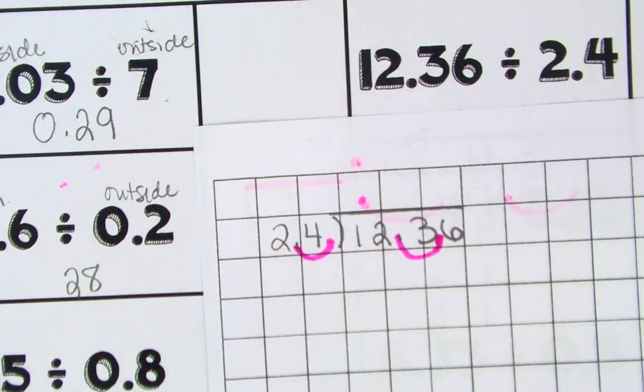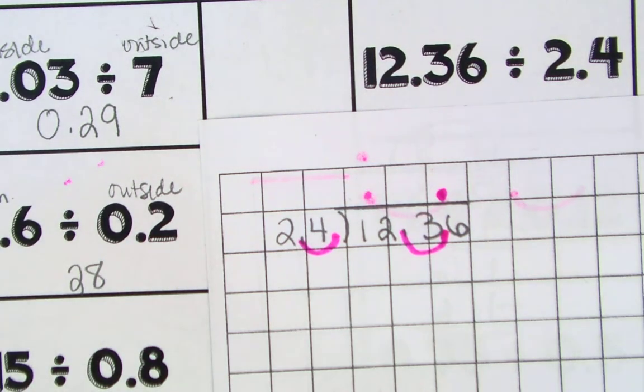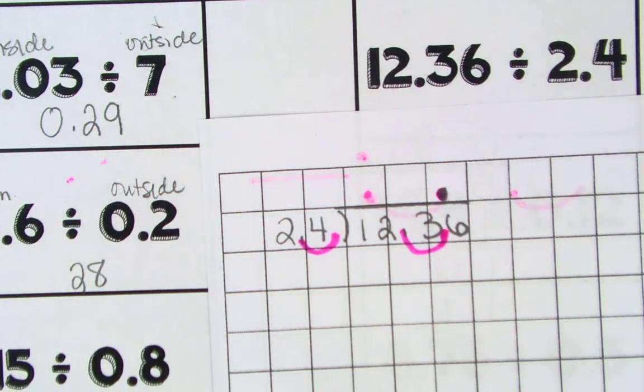One time. Not two. Not to make it even. One time. What I do to one side, I've got to do to the other. So my decimal is right here between my 3 and my 6. Make sure that's nice and dark for you.